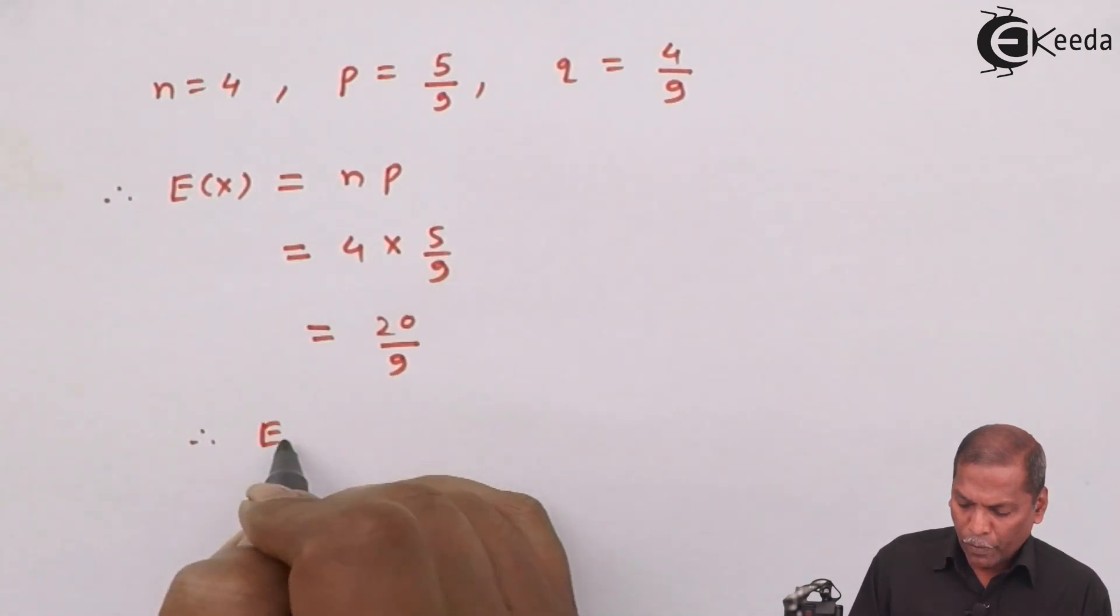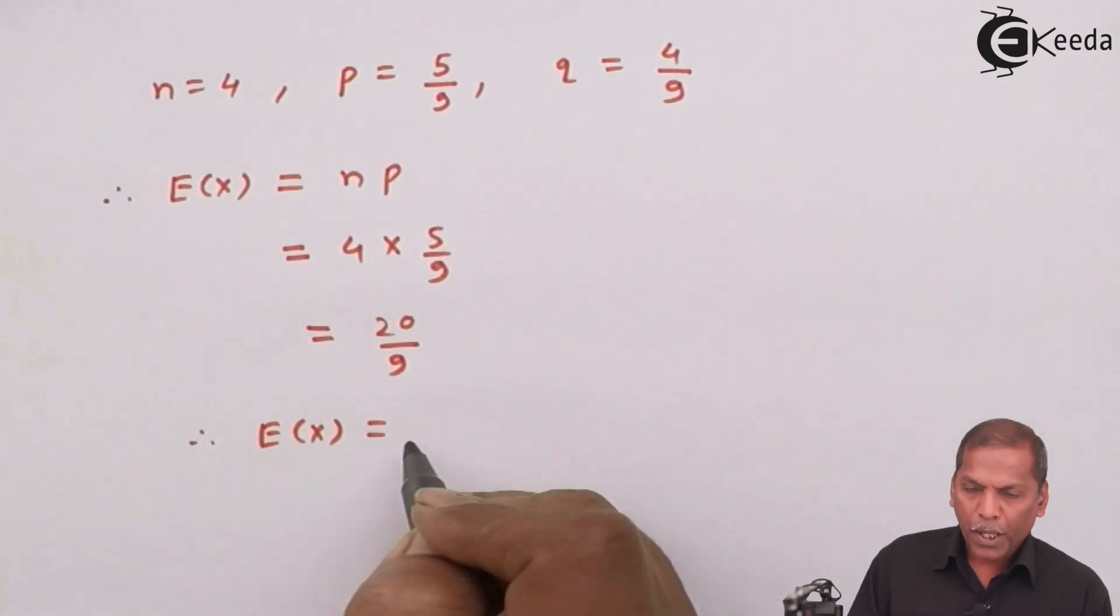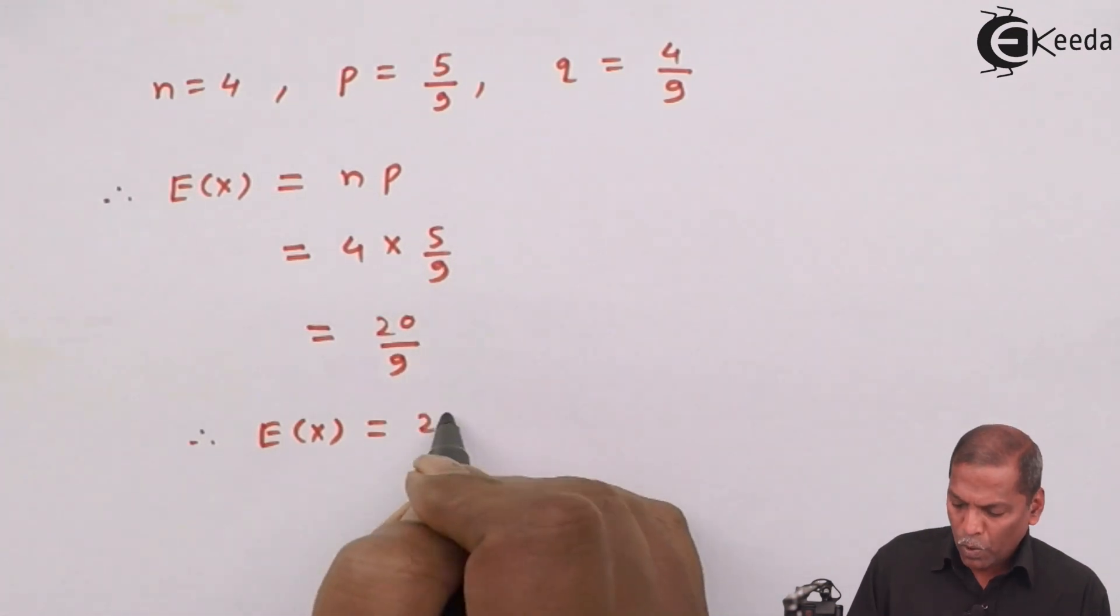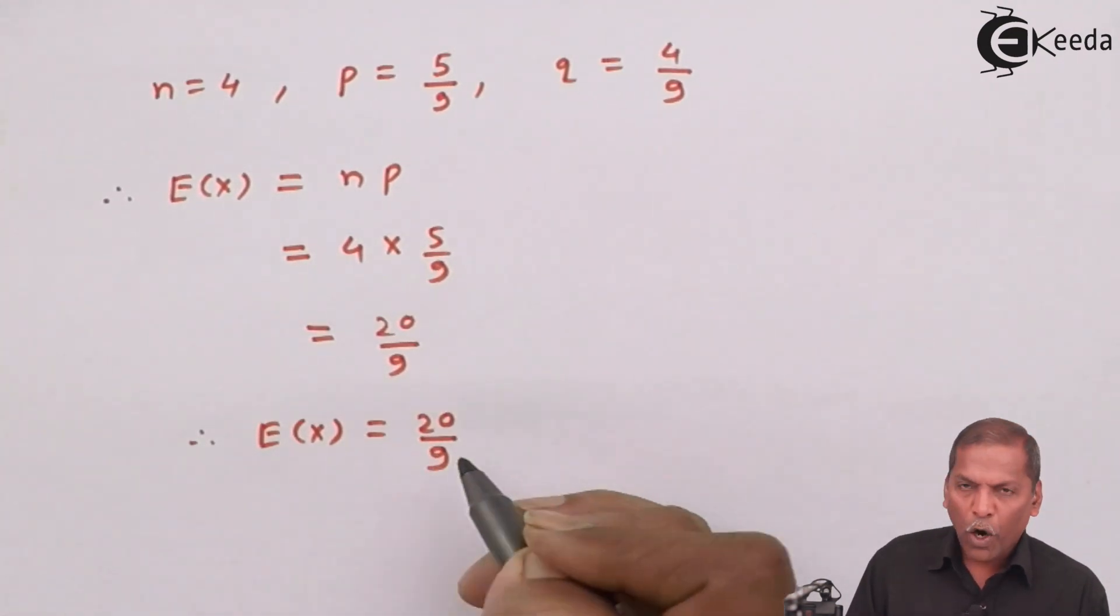So, in this way, we get E of X is equal to 20 upon 9.